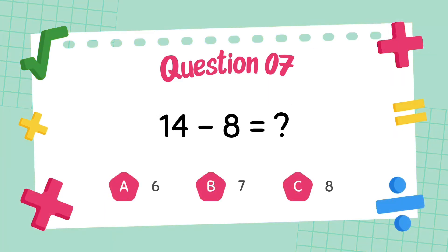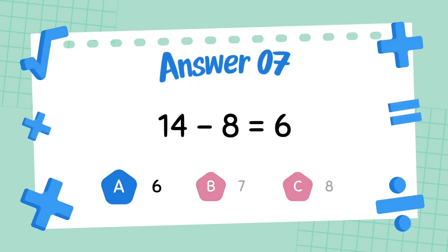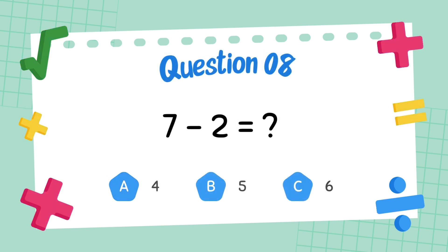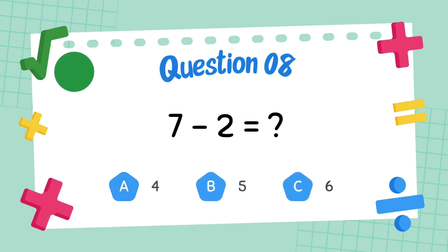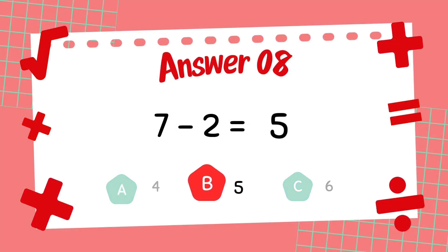What is 14 minus 8? The answer is 8. What is 7 minus 2? The answer is 5.